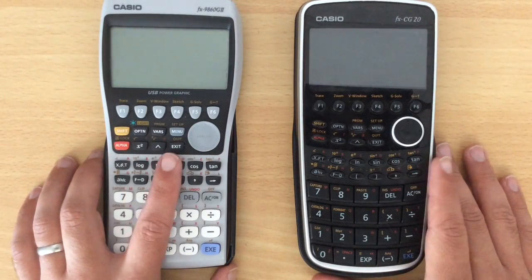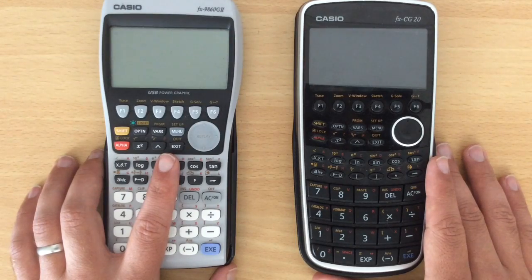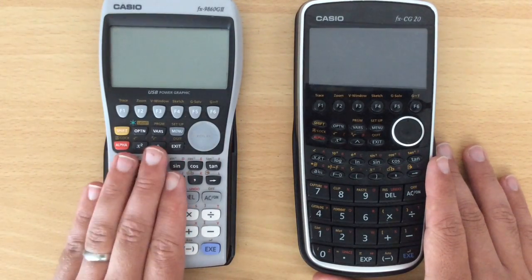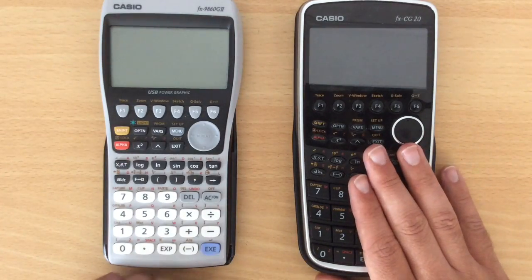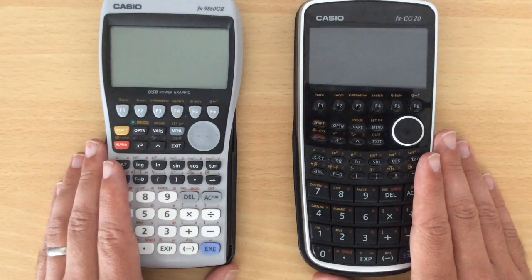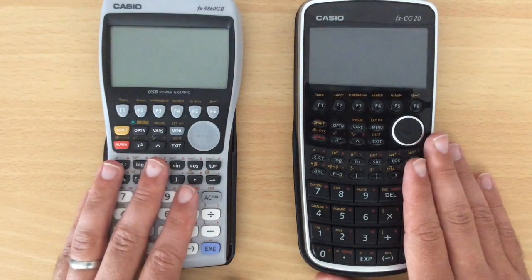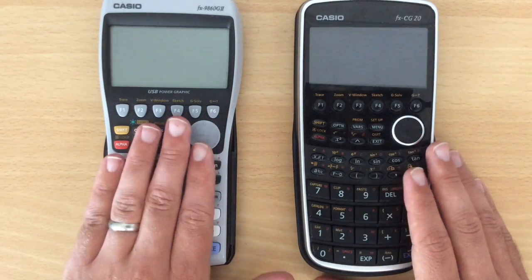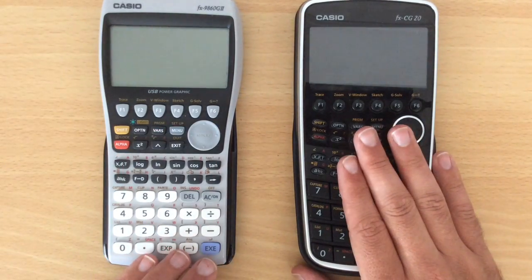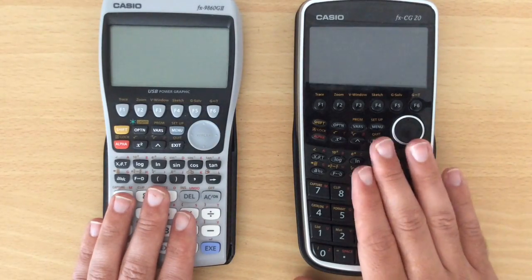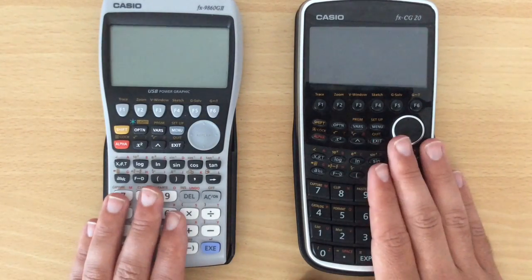The one advantage that the older model has is that it has a better battery life. This will last on average 200 hours as opposed to 140 as quoted by Casio themselves. Obviously it depends which batteries you use and exactly what you're getting them to do. But essentially 200 for this one, 140 for that one. Other than that though, all the advantages lie with the newer model as you'd expect.